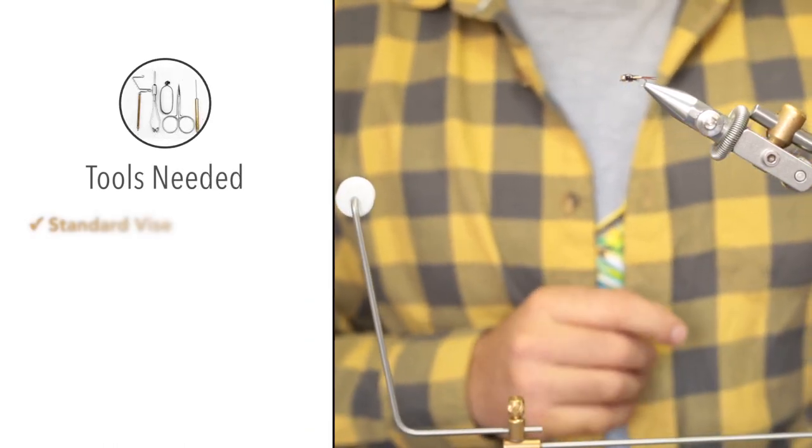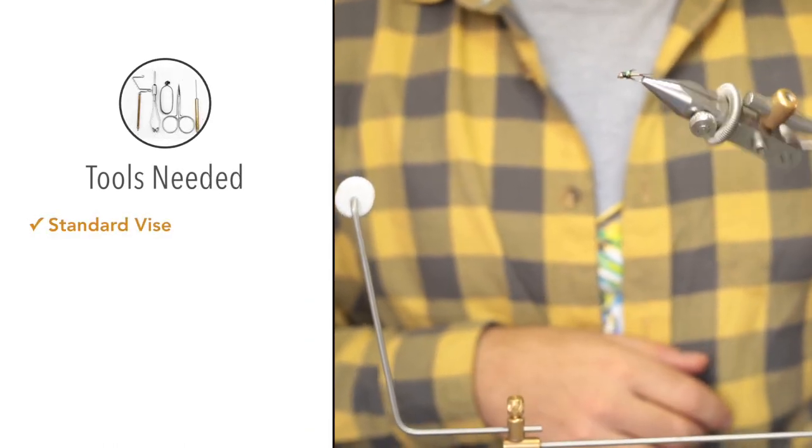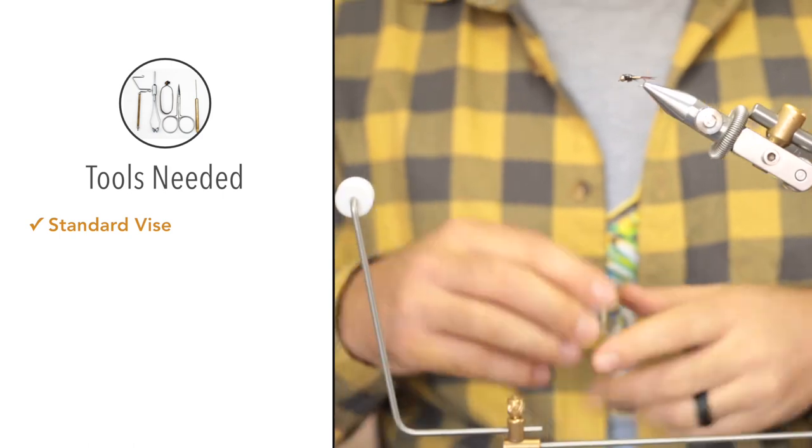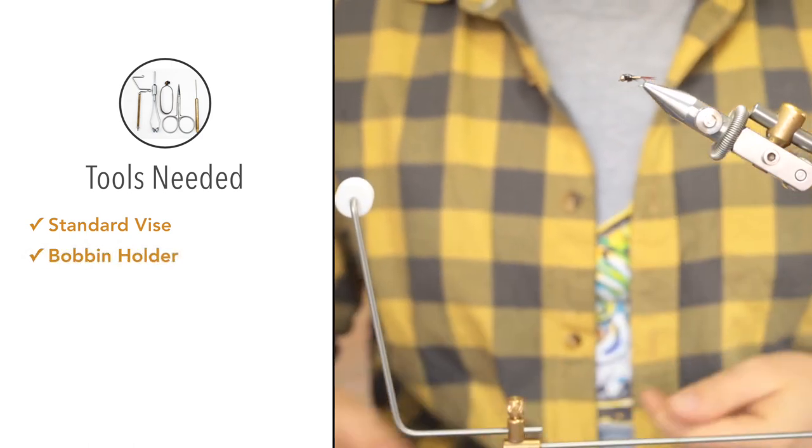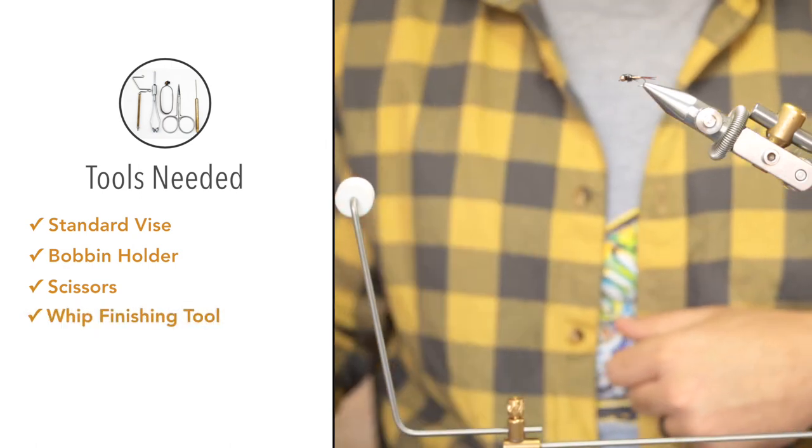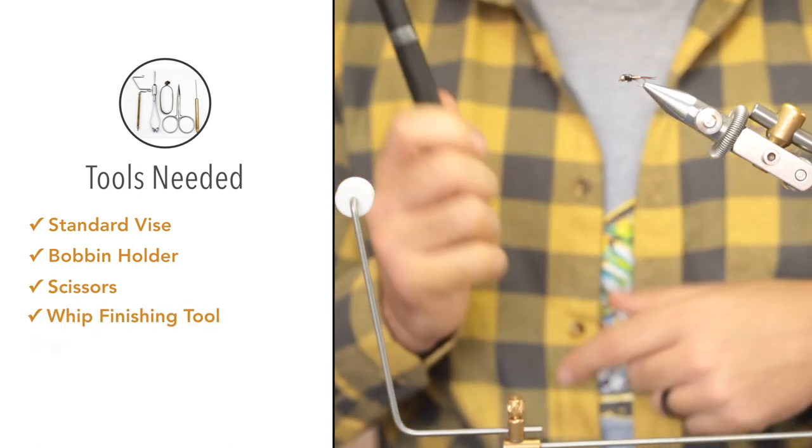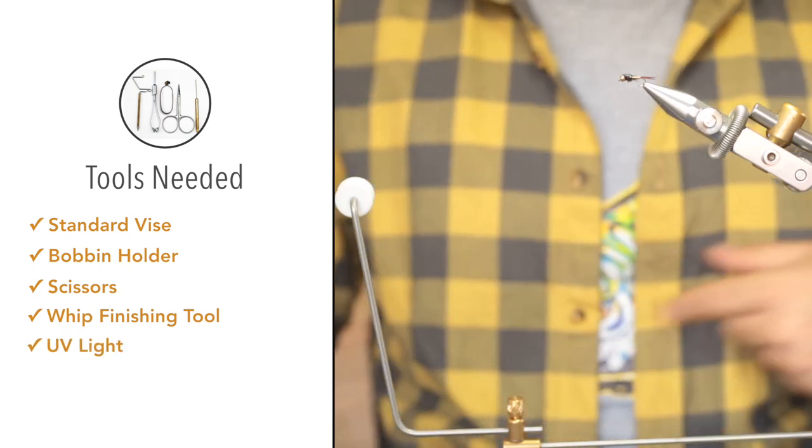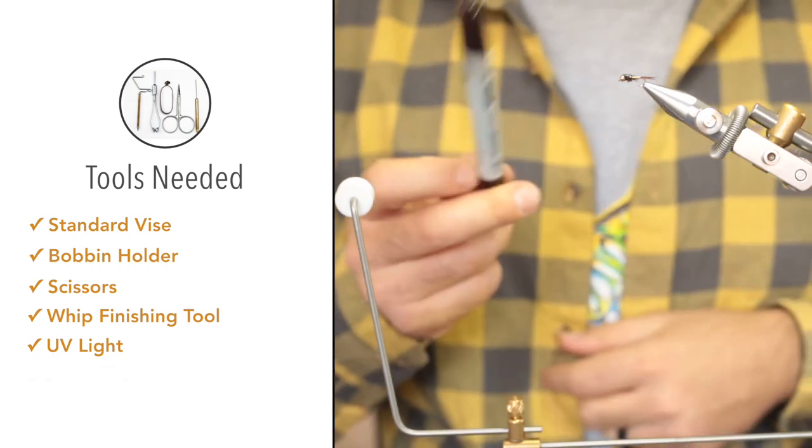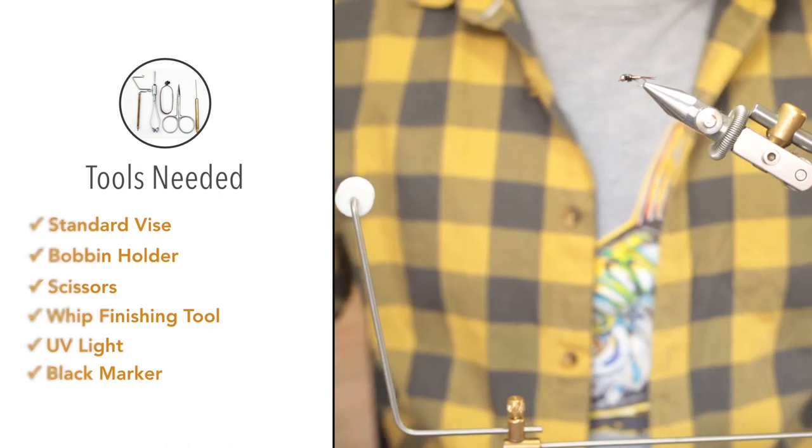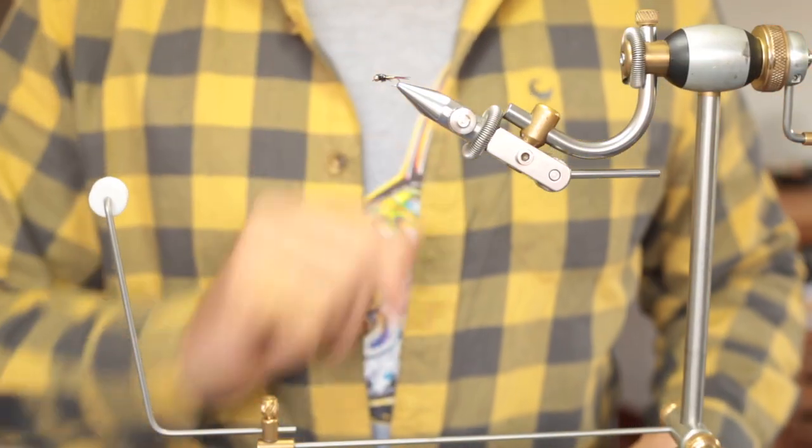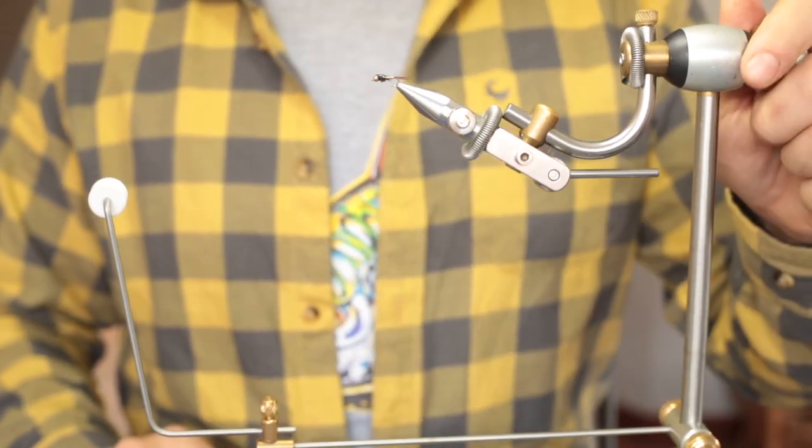On the tool side, obviously a vise—it's not necessary to have a rotary vise. You'll use a bobbin on your thread, a normal pair of scissors, and a whip finishing tool. Also, a UV torch to cure the UV resin. If you're using white thread, just a permanent marker to color the thread. That's about all the tools and material you'll need. So without further ado, let's get cracking.